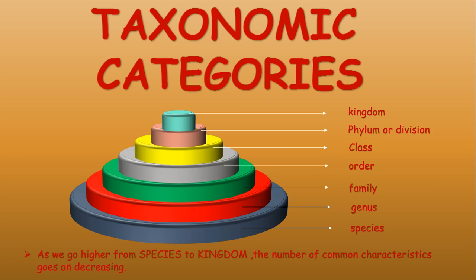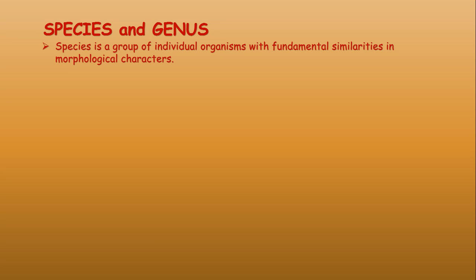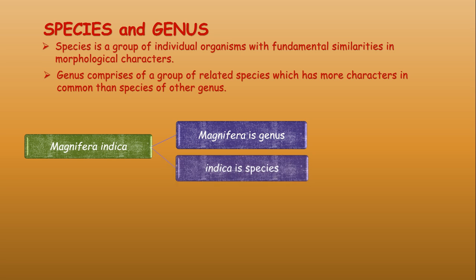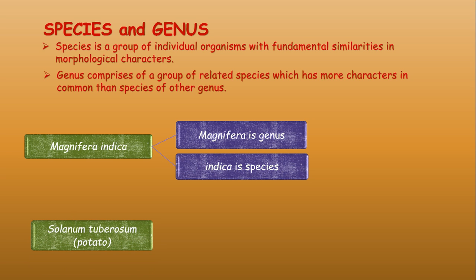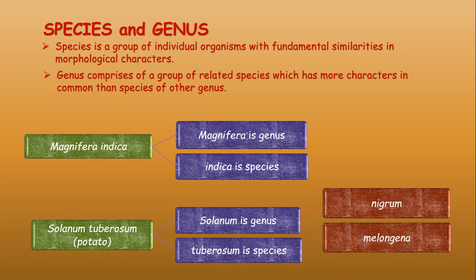Species is a group of individual organisms with fundamental similarities in morphological characters. Genus is a group of related species that have more characters in common than species of other genera. For example, Mangifera indica — Mangifera is the genus and indica is the species. For potato, Solanum tuberosum — Solanum is the genus and tuberosum is the species. The Solanum genus also includes other species like Solanum nigrum and Solanum melongena.